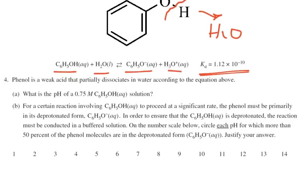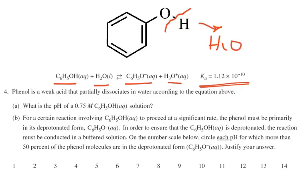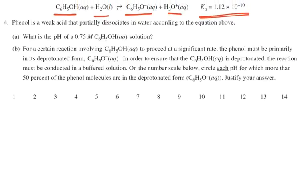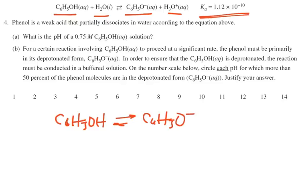The question is: what is the pH of a 0.75 molar solution of C6H5OH, phenol? So first off, let's figure out the pH. This is a standard reaction. We have our acid C6H5OH, and that's going to turn into C6H5O with a minus charge and H+. We can do a little ICE table.